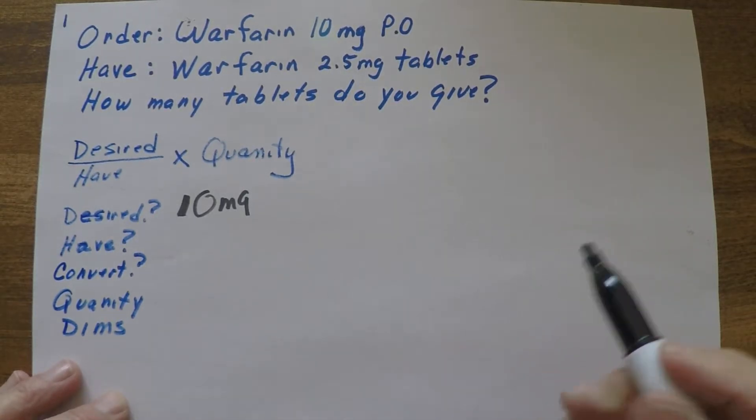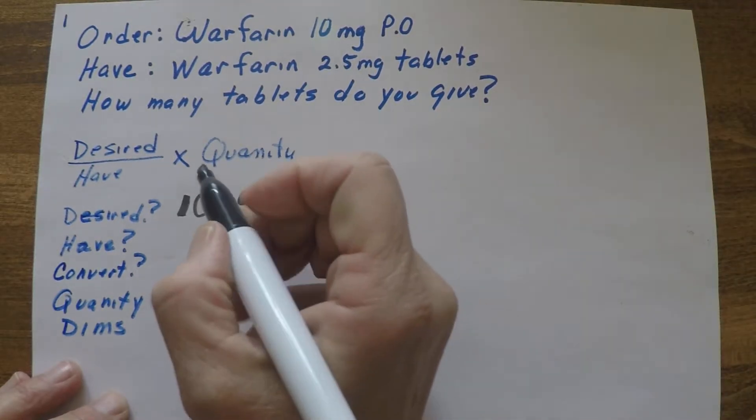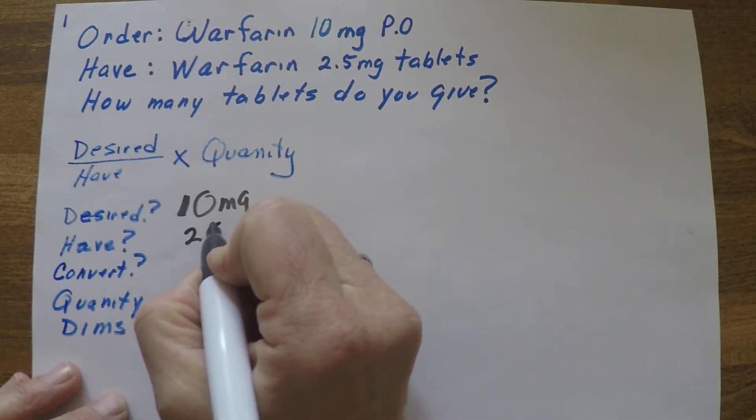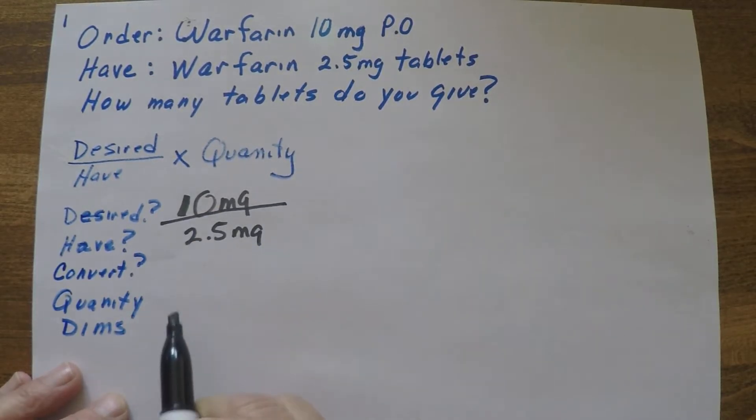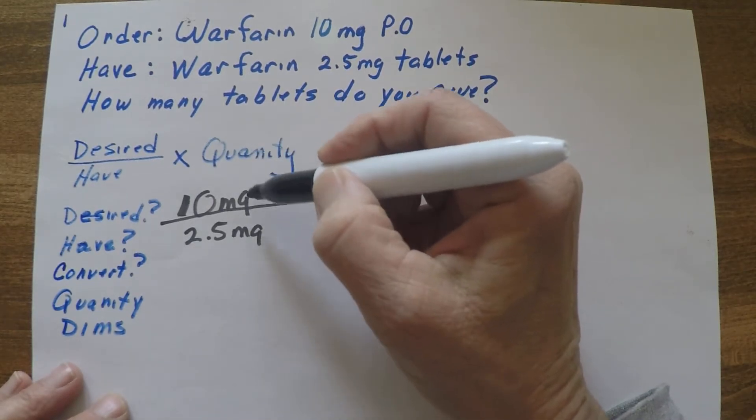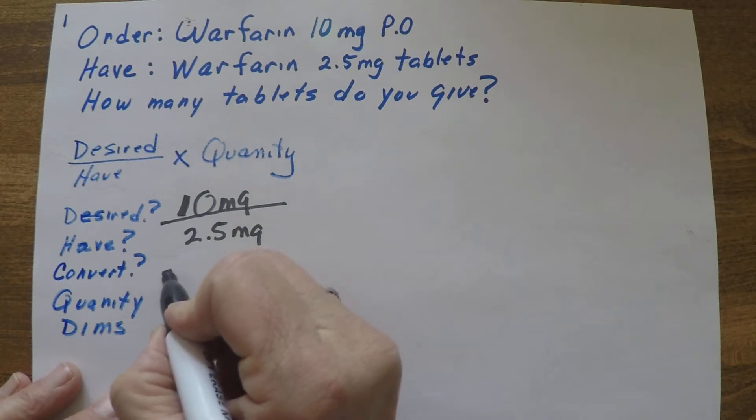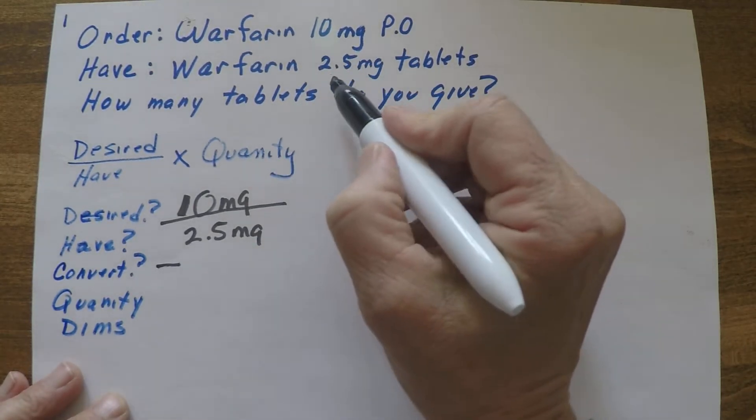I have Warfarin 2.5 - that's what my label will say or that's what my packaging will say. So I have 2.5 milligram tablets. Do I need to convert these? No, these are the same units. When you use this formula method they must be the same unit, so I don't need to convert.